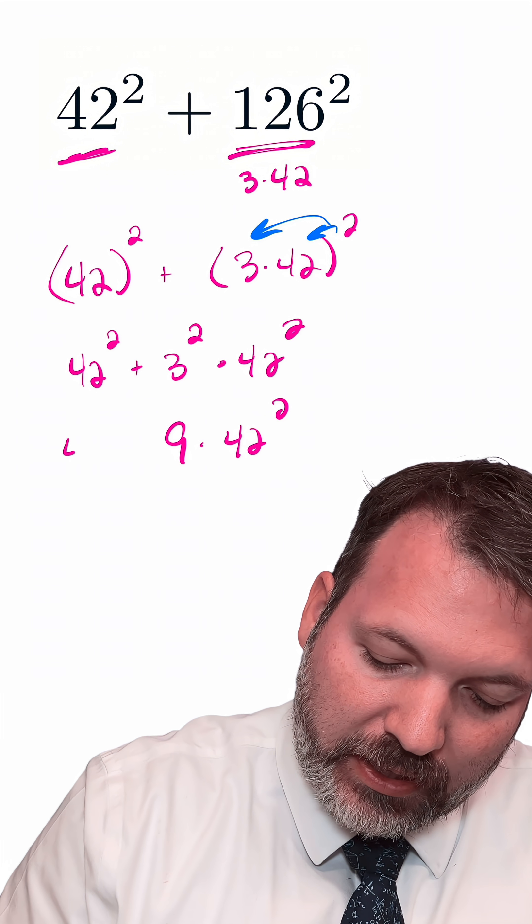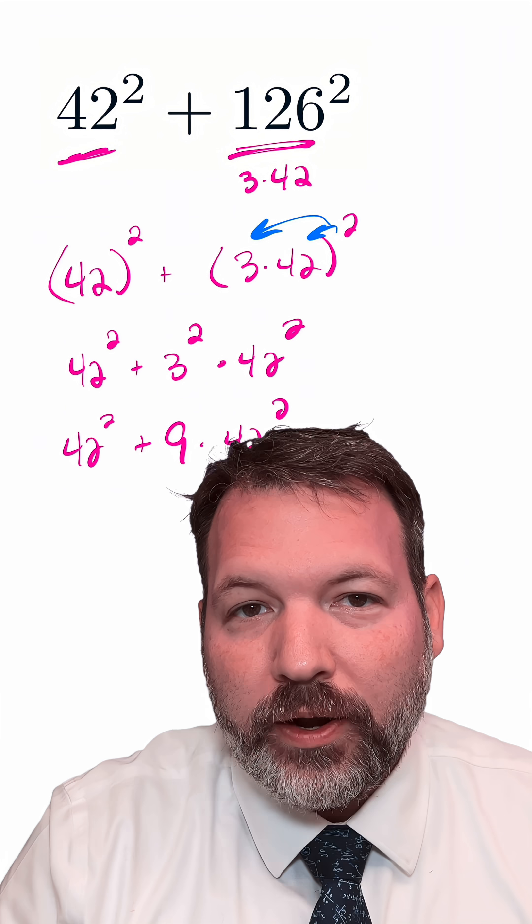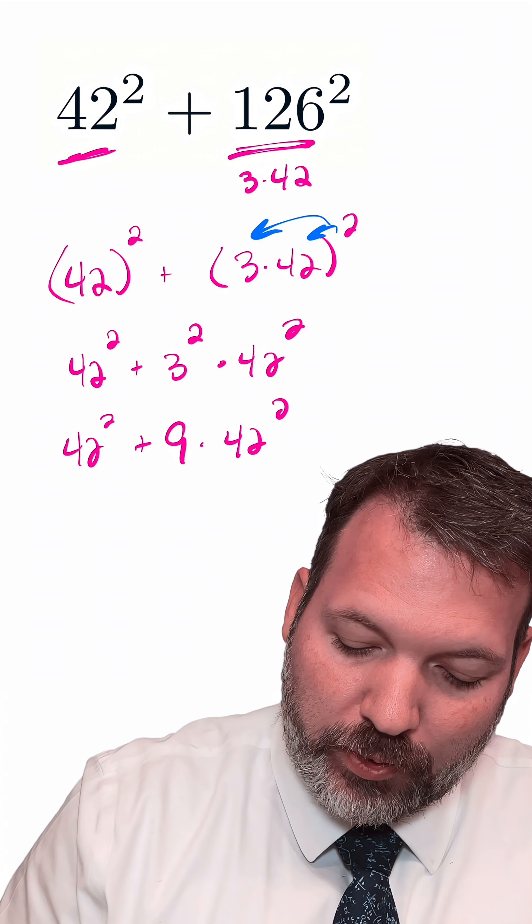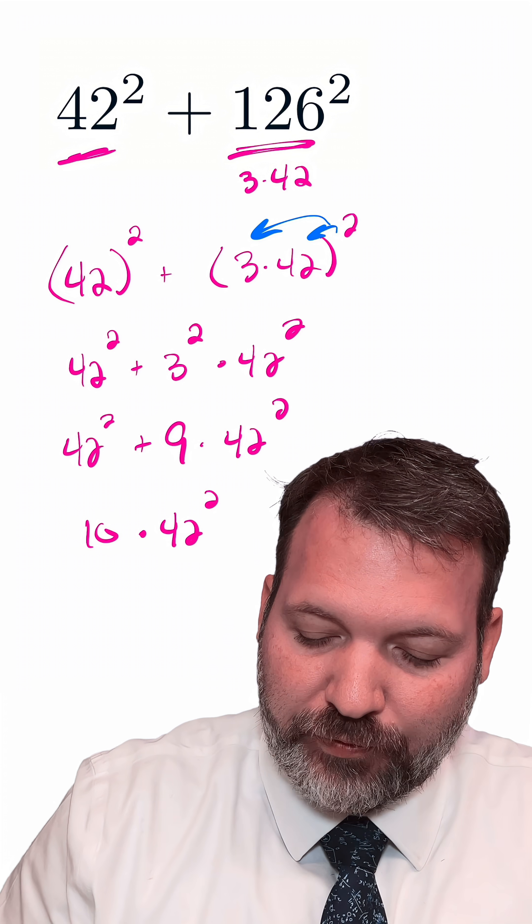So this is 1 × 42² plus 9 more 42² makes 10 × 42².